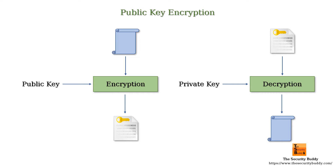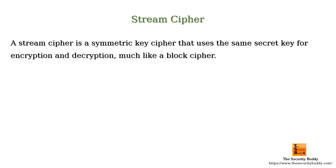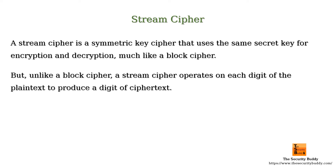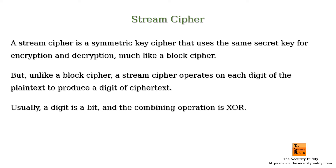A stream cipher is a symmetric key cipher that uses the same secret key for encryption and decryption, much like a block cipher. But unlike a block cipher, a stream cipher operates on each digit of the plain text to produce a digit of cipher text. In other words, each digit of plain text is combined with a digit of key stream to produce a digit of cipher text.